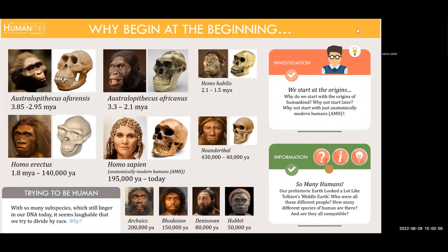Sometimes students will ask how we could interbreed with those other species. Here's what happened: we started with a common origin, that branched out, we isolated in different populations around the world, and then we came back and ran into each other. Homo sapiens ran into Neanderthals, and because we shared a common ancestor, we were still able to breed — sort of like how horses and donkeys can still breed to make mules. To this day, if you run an Ancestry.com DNA test, some humans will find that up to 7% of their DNA is Neanderthal, and around 3% might be Homo erectus.